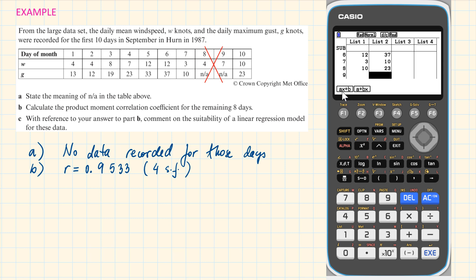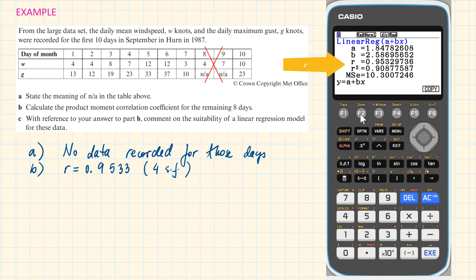Here we can choose A plus B X. However, the options F1 and F2 are the same, but the letters are swapped. The letter R is what we are looking for.